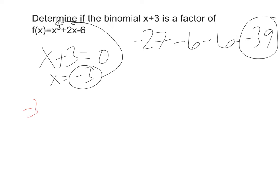I put negative 3 in the box, and then I'd have 1 for my first one. There's no x squared, so I'd put 0, then 2, then negative 6.